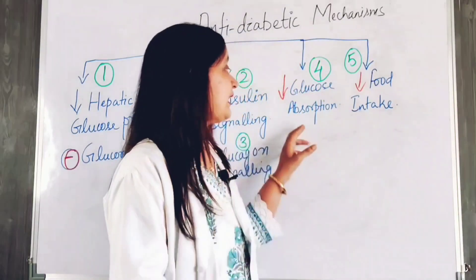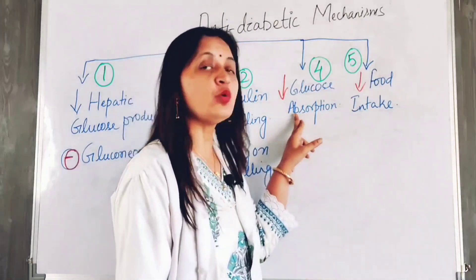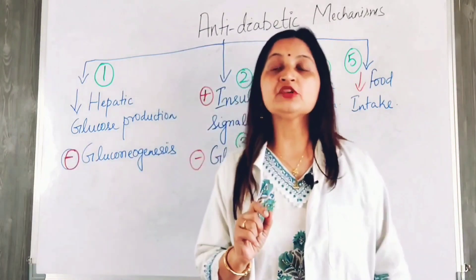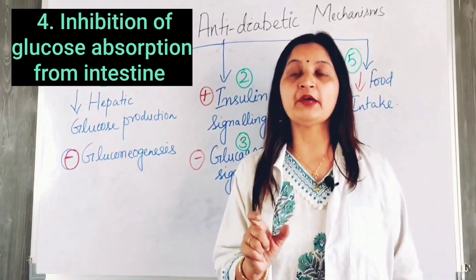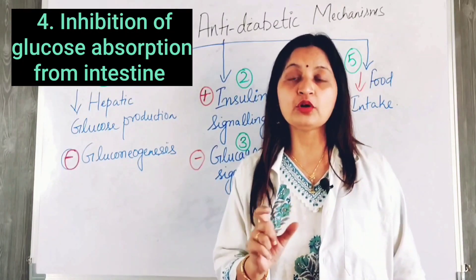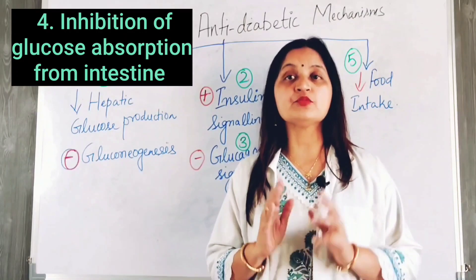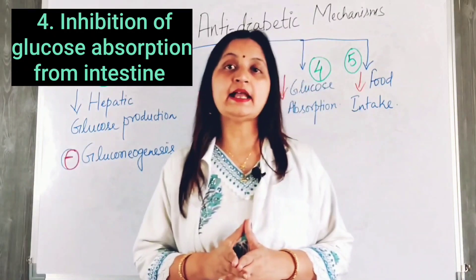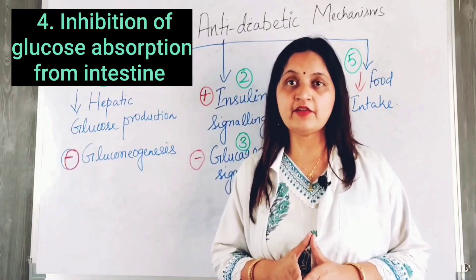The fourth mechanism is reduction in glucose absorption from the gut. Metformin is known to alter the microbiome of the gut, changing the gut flora, which reduces glucose absorption from the gut and helps in lowering the blood glucose level.